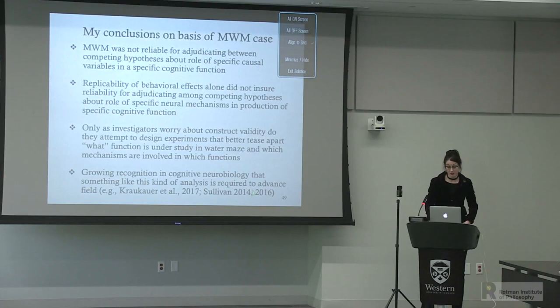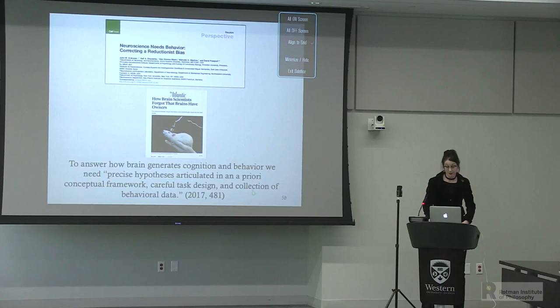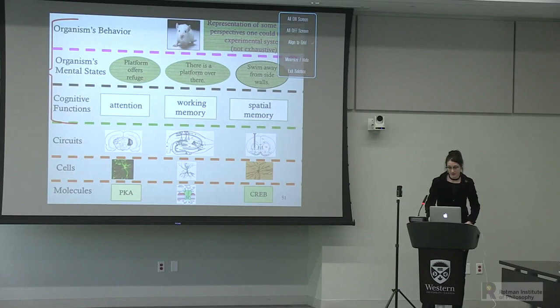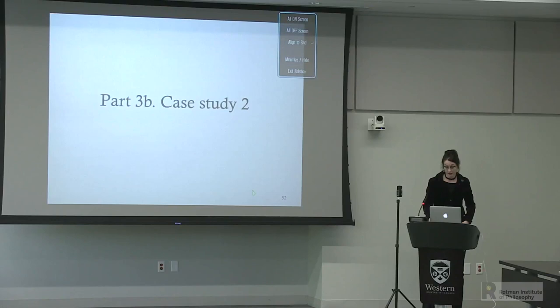My conclusions on the basis of this case: the paradigm was not reliable for adjudicating between competing hypotheses about the role of specific causal variables in a specific cognitive function. The replicability of behavioral effects alone did not ensure reliability for adjudicating among competing hypotheses about specific neural mechanisms. Only as investigators begin to worry about construct validity do they attempt to design experiments that better tease apart what function is under study and which mechanisms are involved. There's a growing recognition in cognitive neurobiology that this kind of analysis is required—a 2017 Neuron publication by Krakauer and colleagues argues that we need precise hypotheses articulated in an a priori conceptual framework, careful task design, and collection of behavioral data.